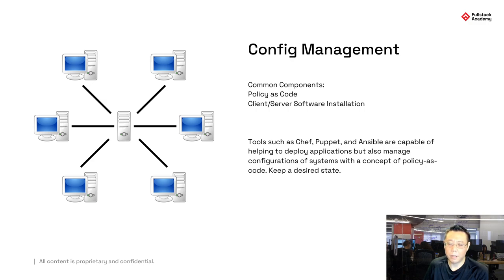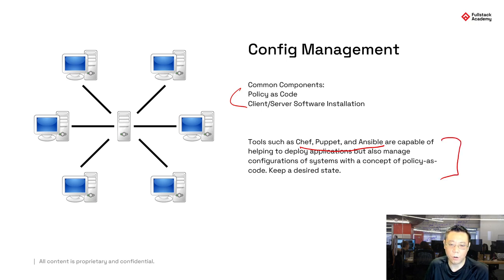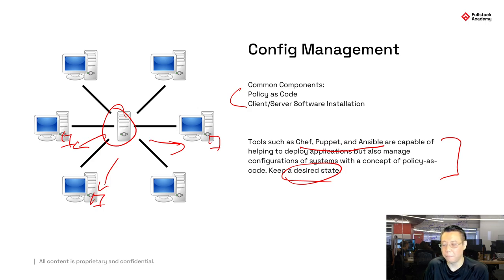We talked about scalability and configuration baselines. Tools like Chef, Puppet, and Ansible — and Microsoft SCCM in the Windows world, or AWS Systems Manager (SSM) in the cloud world — are considered policy as code. They maintain a desired state by installing agents on computers, deploying changes on schedule, and ensuring systems are compliant to a certain patch level, with firewall and antivirus enabled.